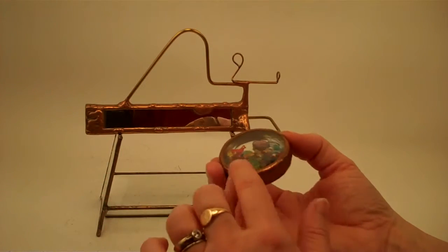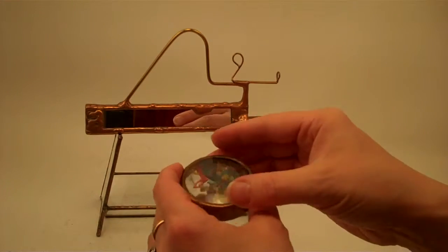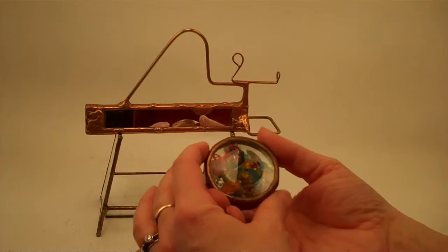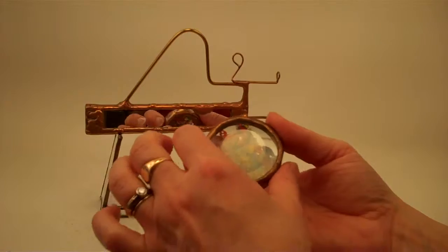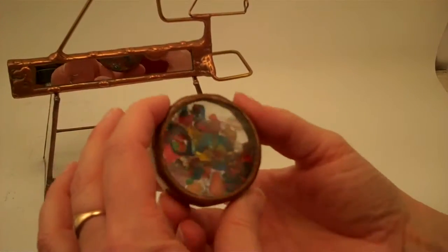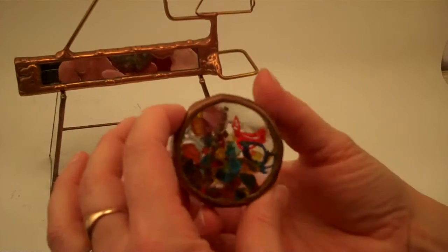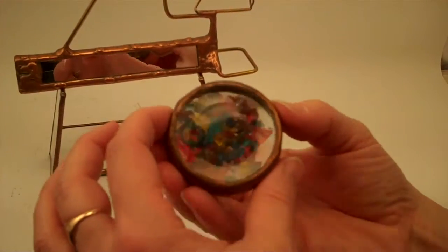The disc itself has a beveled edge as well so that's going to twist and turn the light a little bit as it enters in and inside this disc is hand lamp worked glass, faceted glass beads and stained glass chips that will tumble and fall to change and create all the kaleidoscopic images for you.